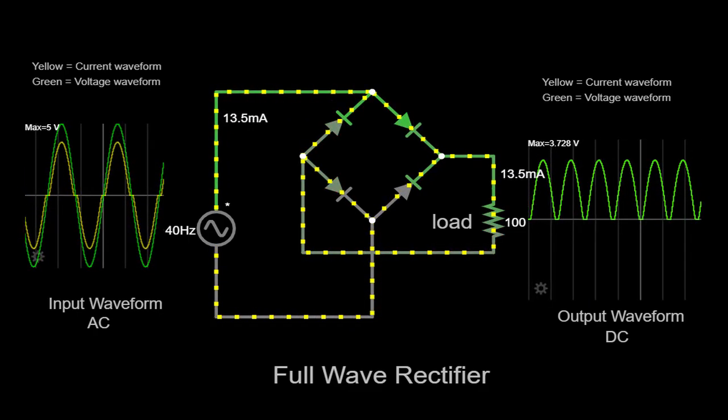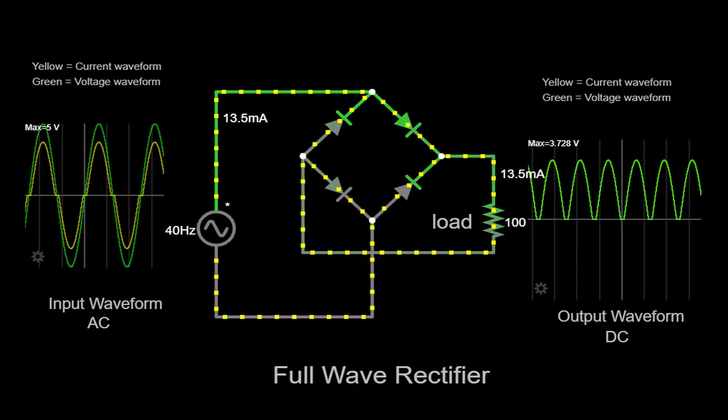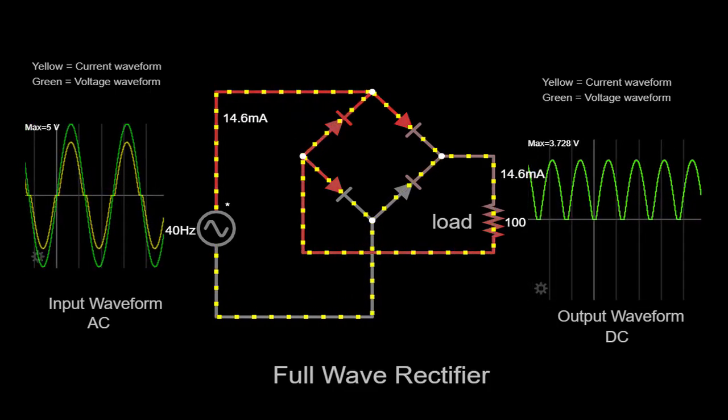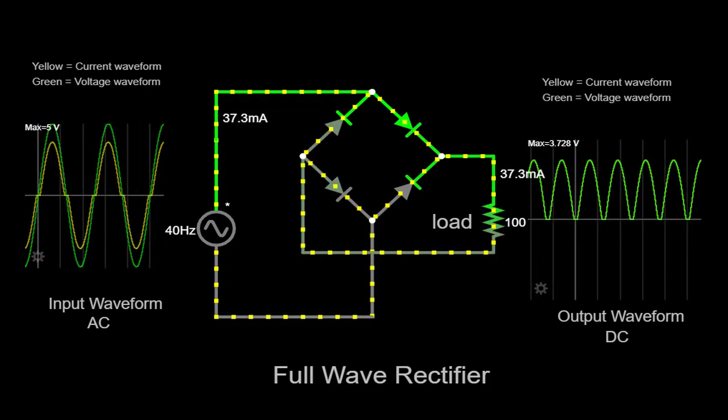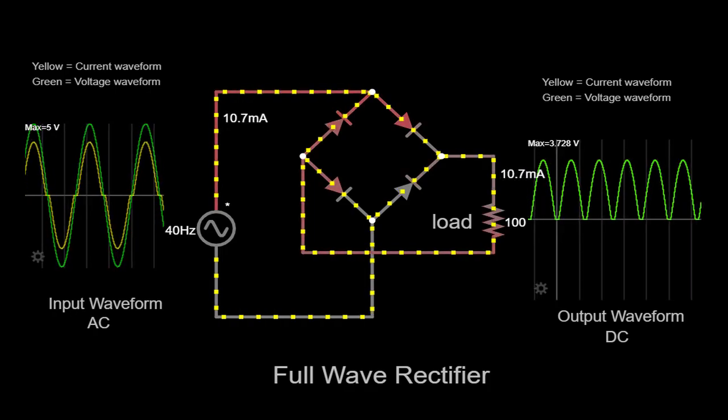When we observe the input waveform on the scope, we can see a sinusoidal shape with a frequency of 40 hertz. This waveform represents the alternating current supplied by the AC source.